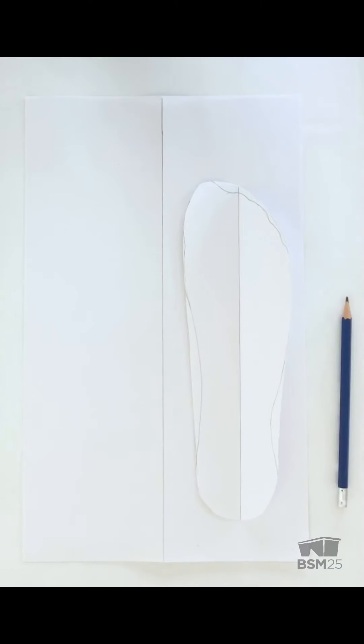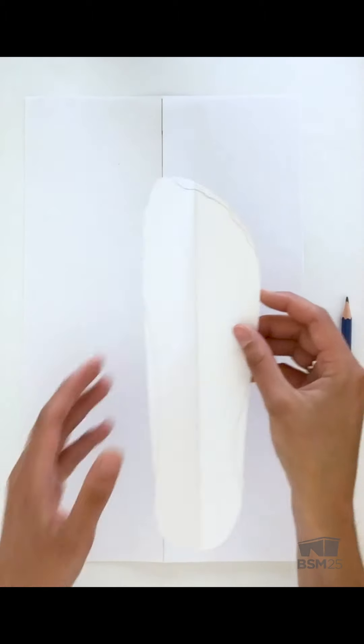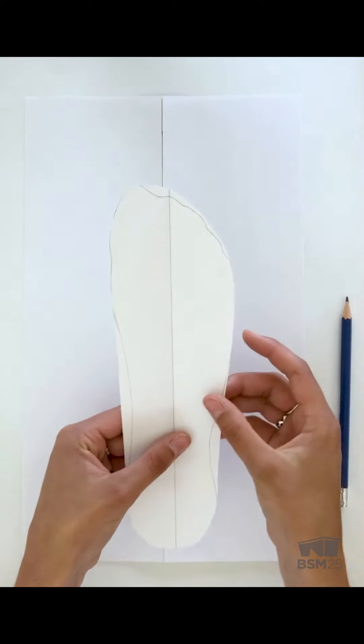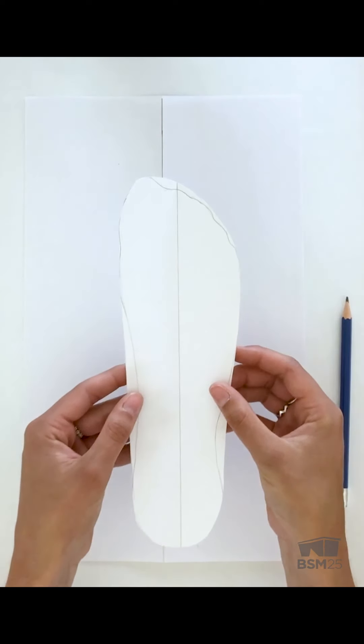To make the moccasin pattern, we're going to be using an 8 by 14 inch piece of paper as well as a trace out of your foot. Once your foot has been traced out, go ahead and blend in any curves or bumpiness around the toe area. You're then going to want to cut this piece out.